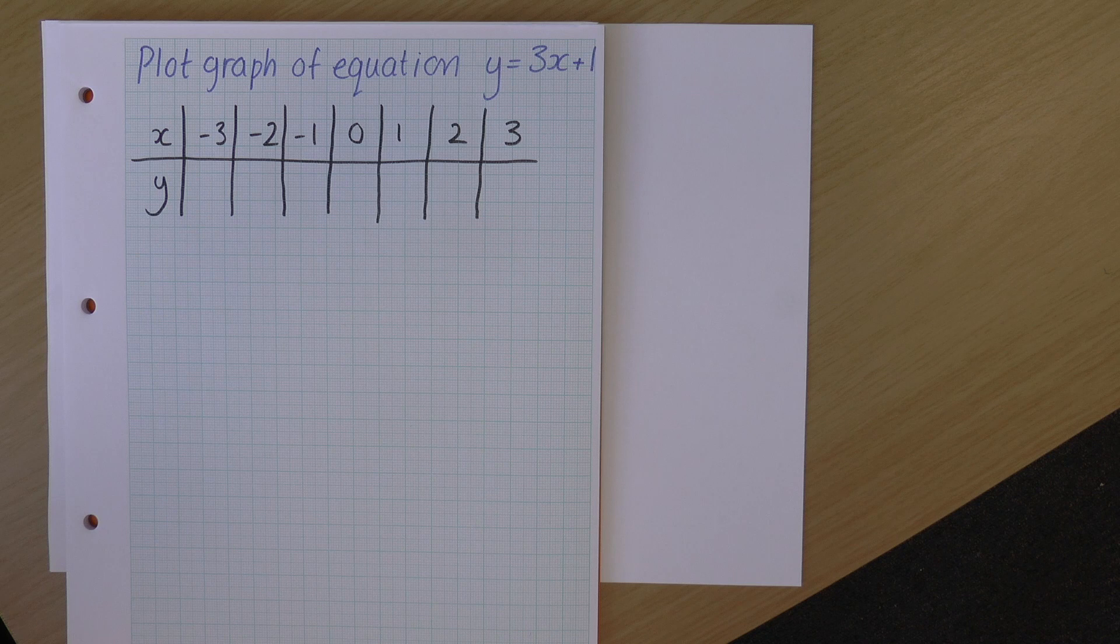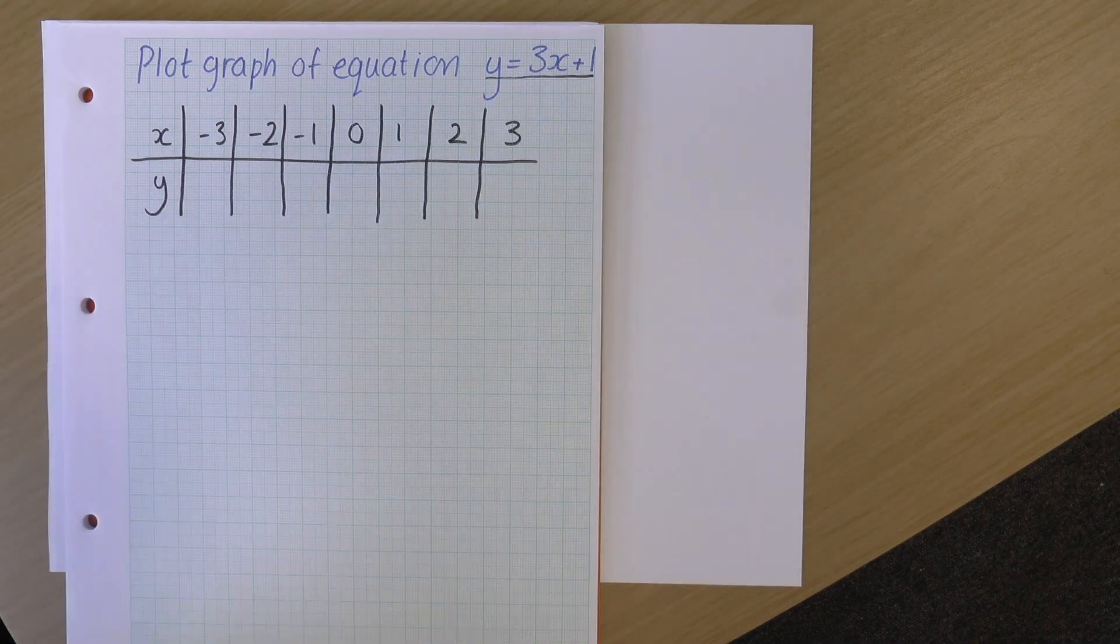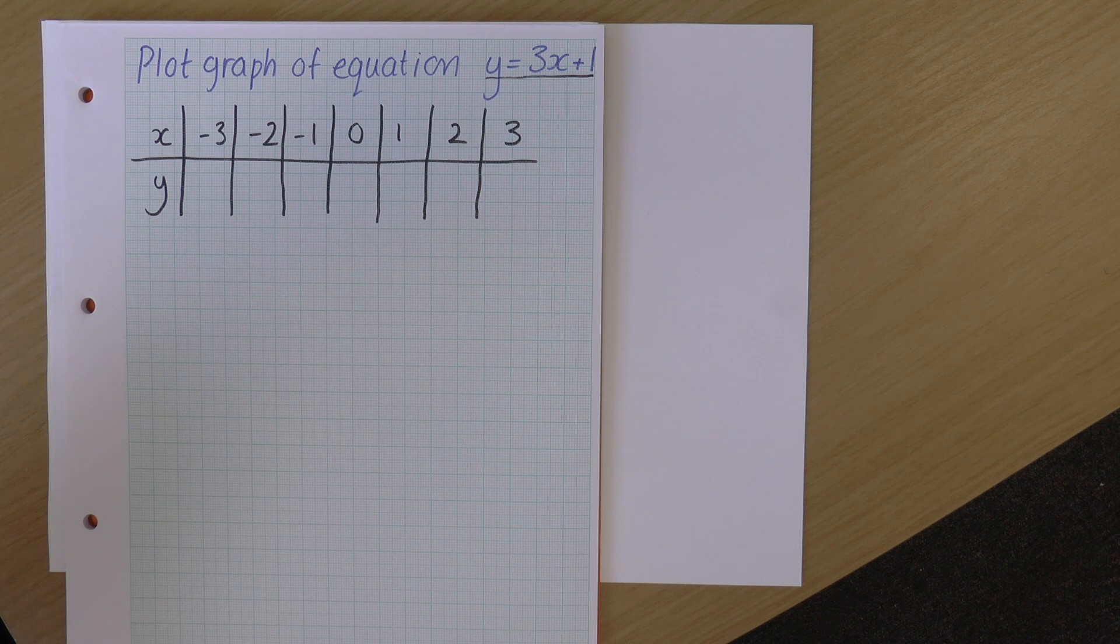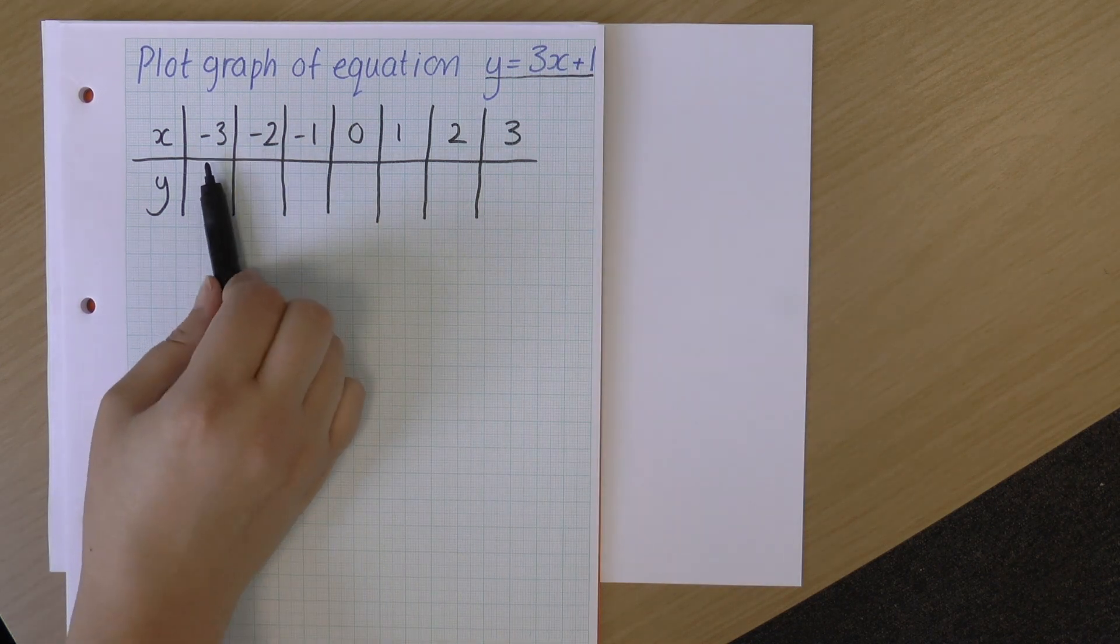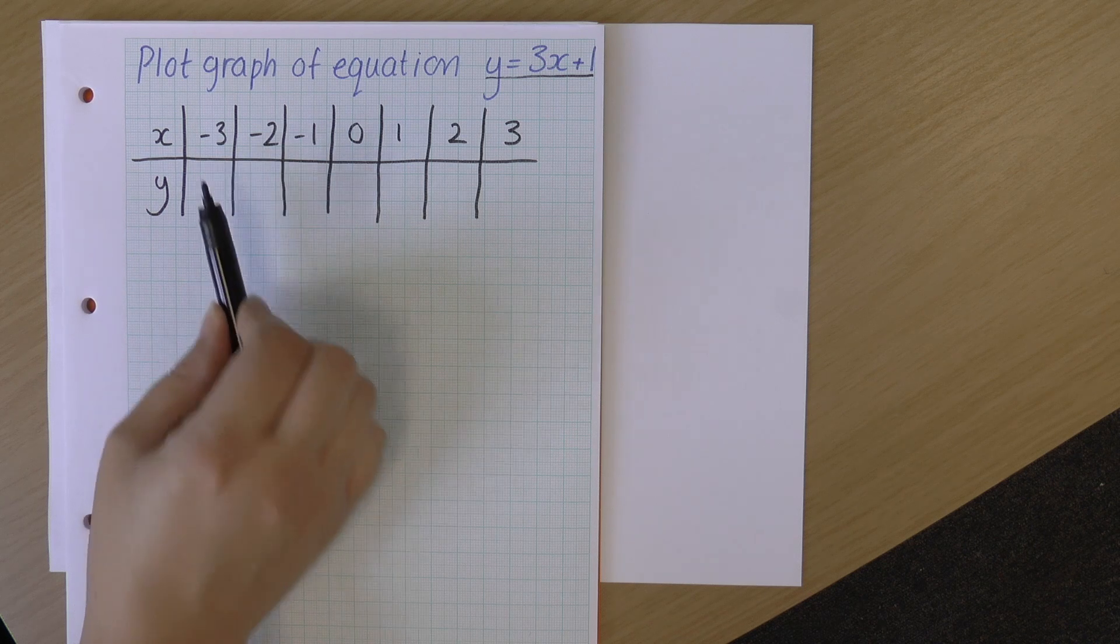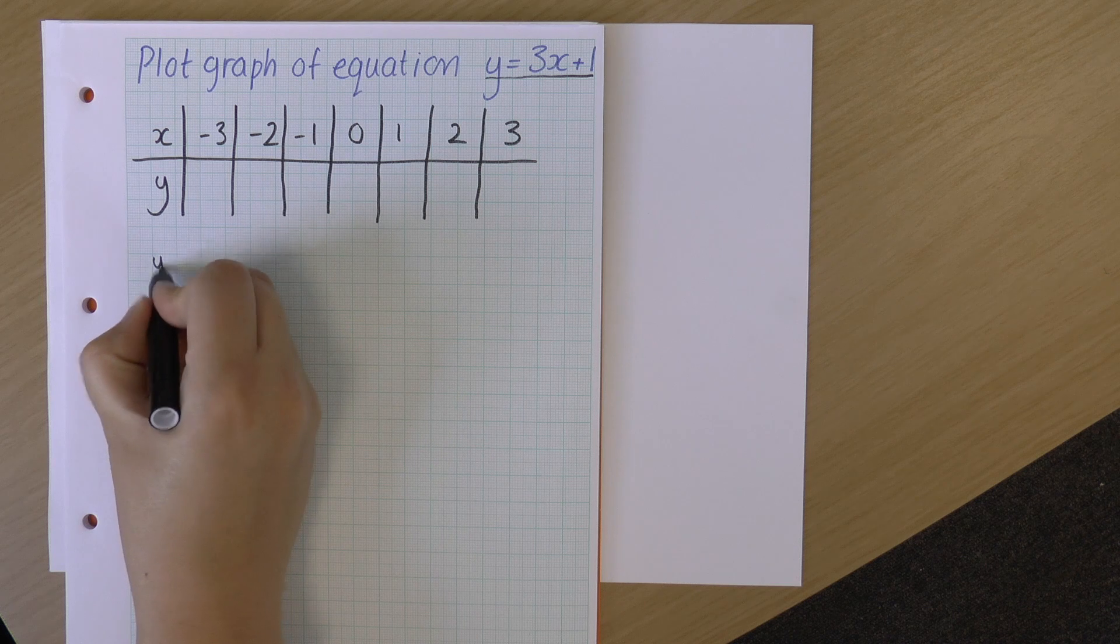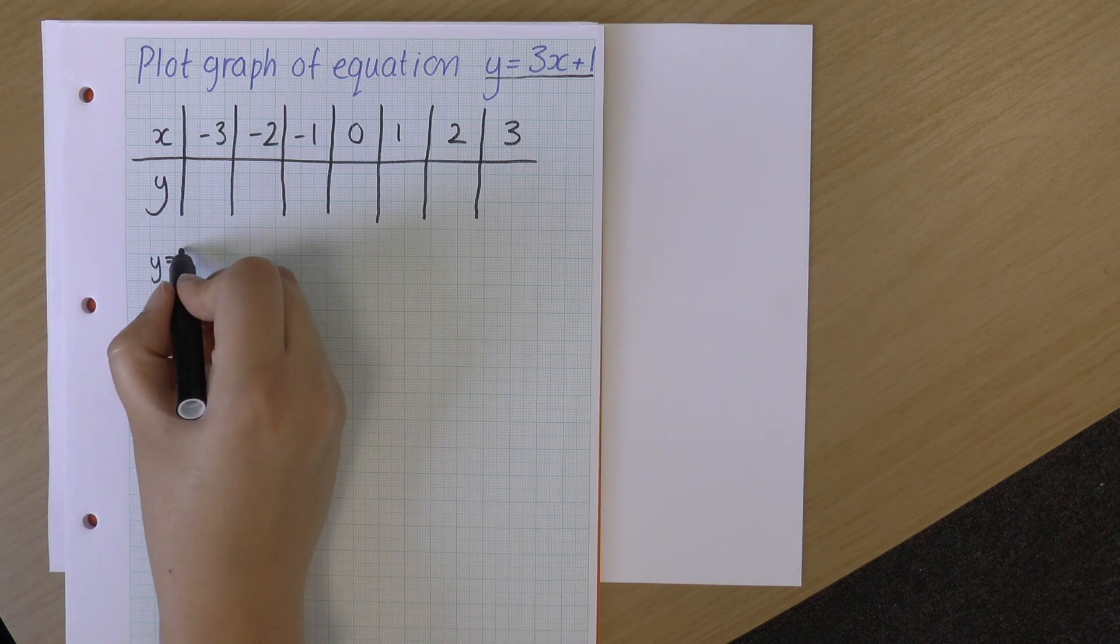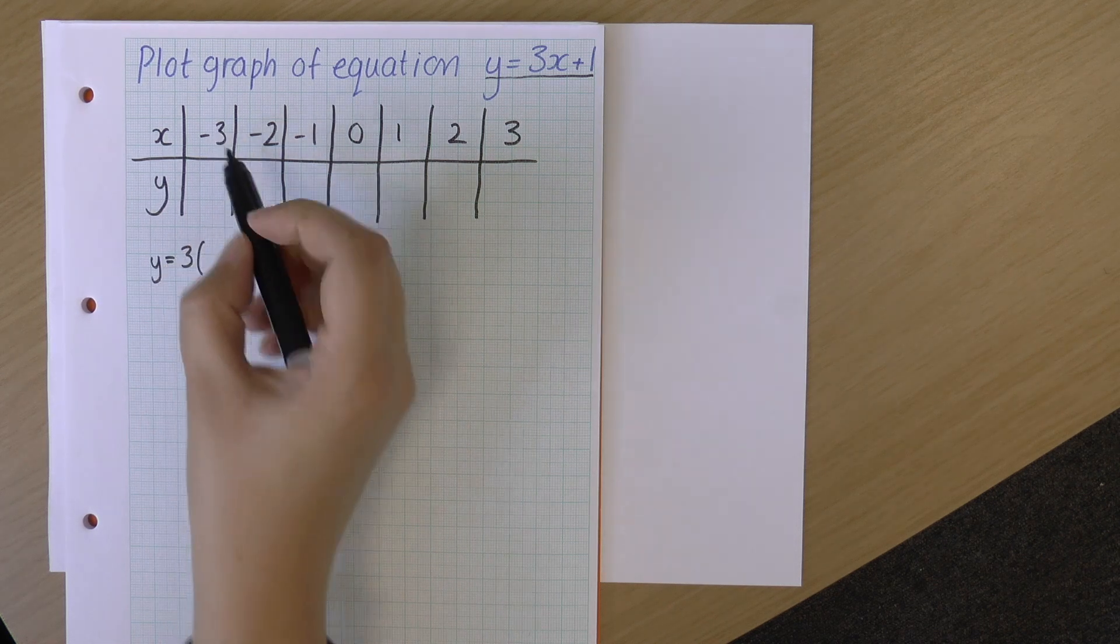And what I do now is I take this equation, y equals 3x plus 1, and I input my x values into that equation to get y. And the way I do it is I just replace that x with each of these numbers in turn. So let's have a look at this first one.